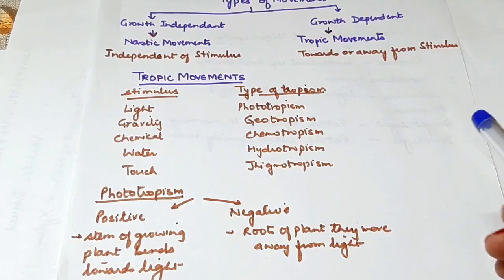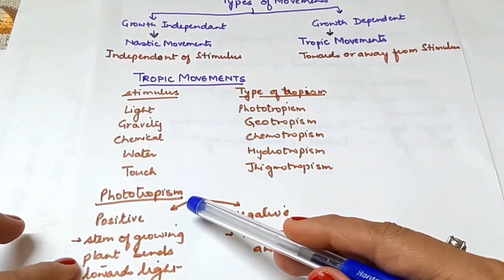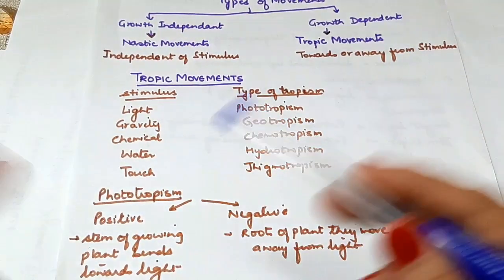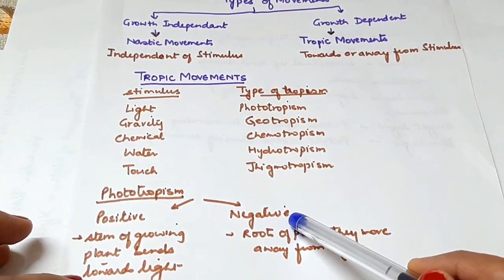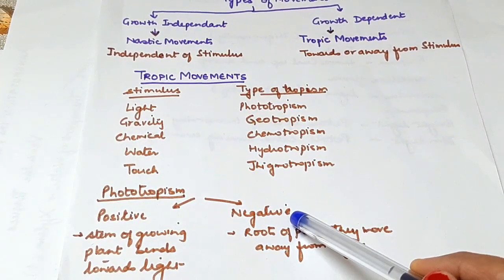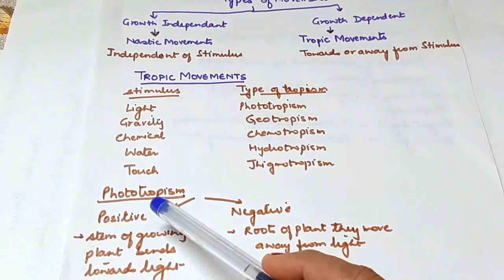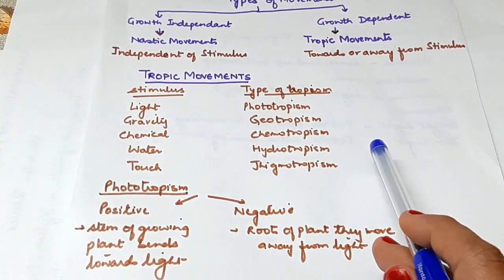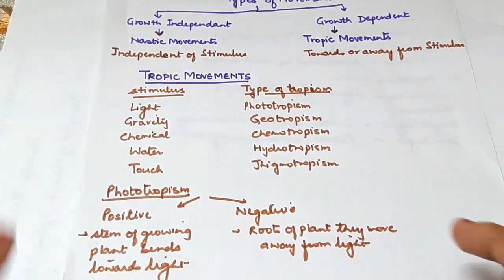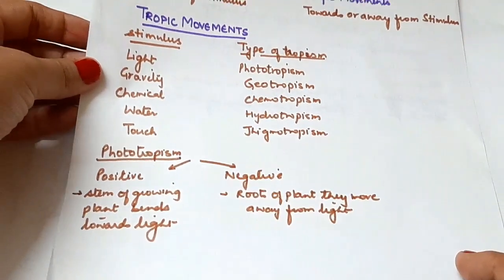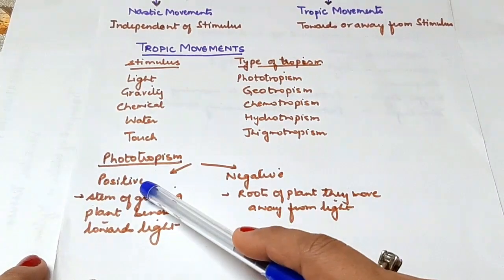The response of a plant to light is called phototropism. We divide phototropism into two categories: positive and negative. When a plant moves towards the light, that is positive phototropism. For example, stems grow towards the light, bending and growing towards the light source.